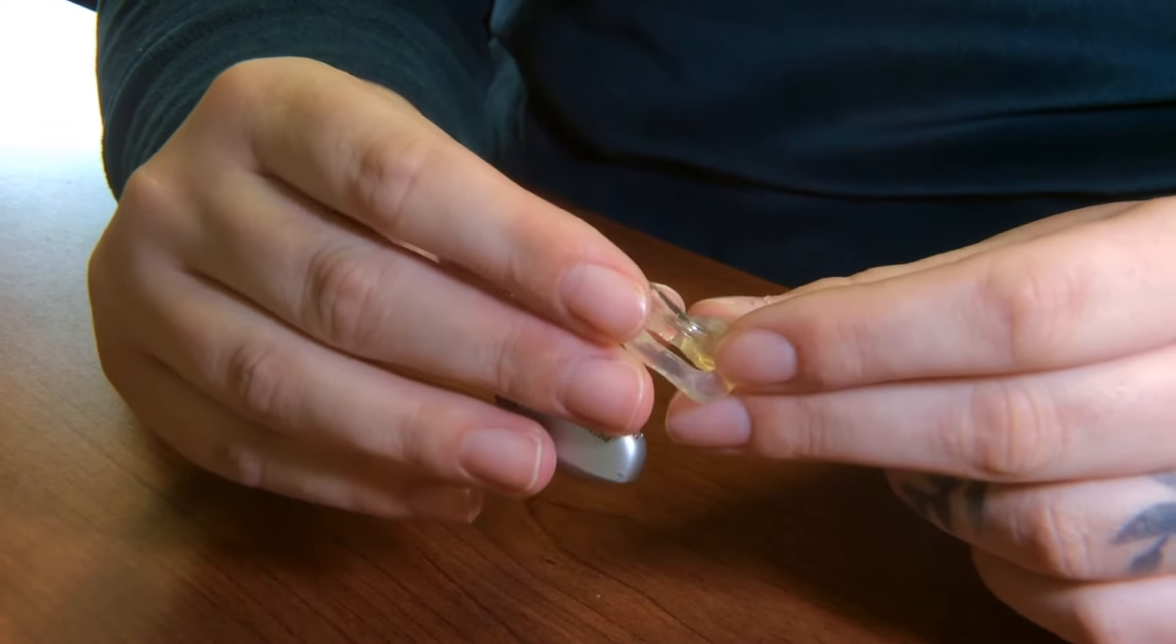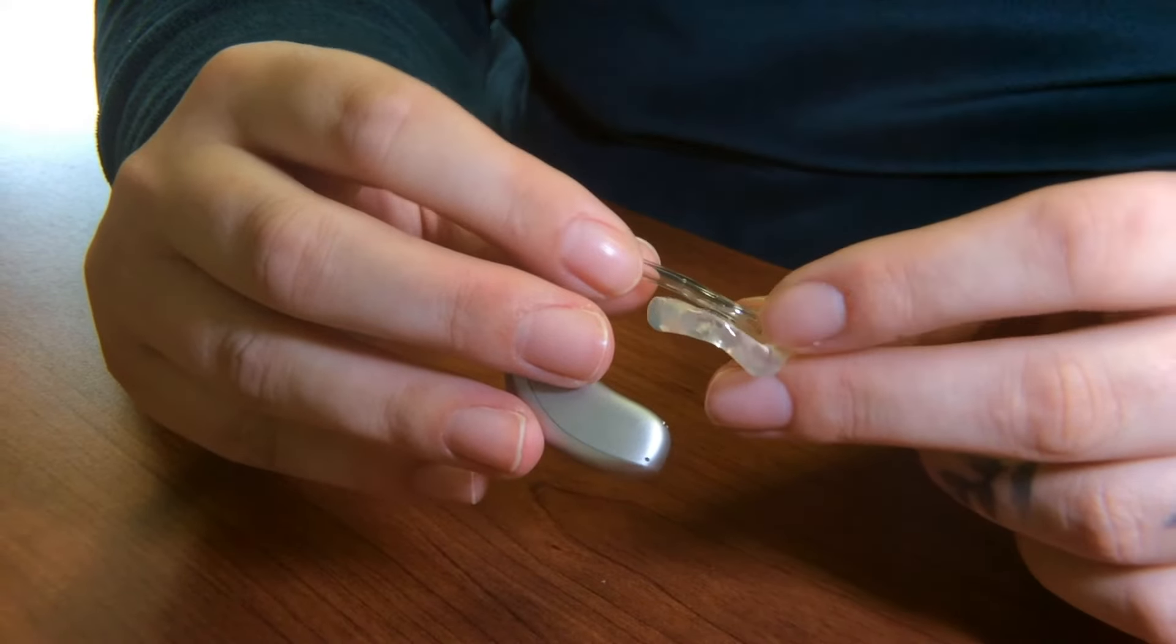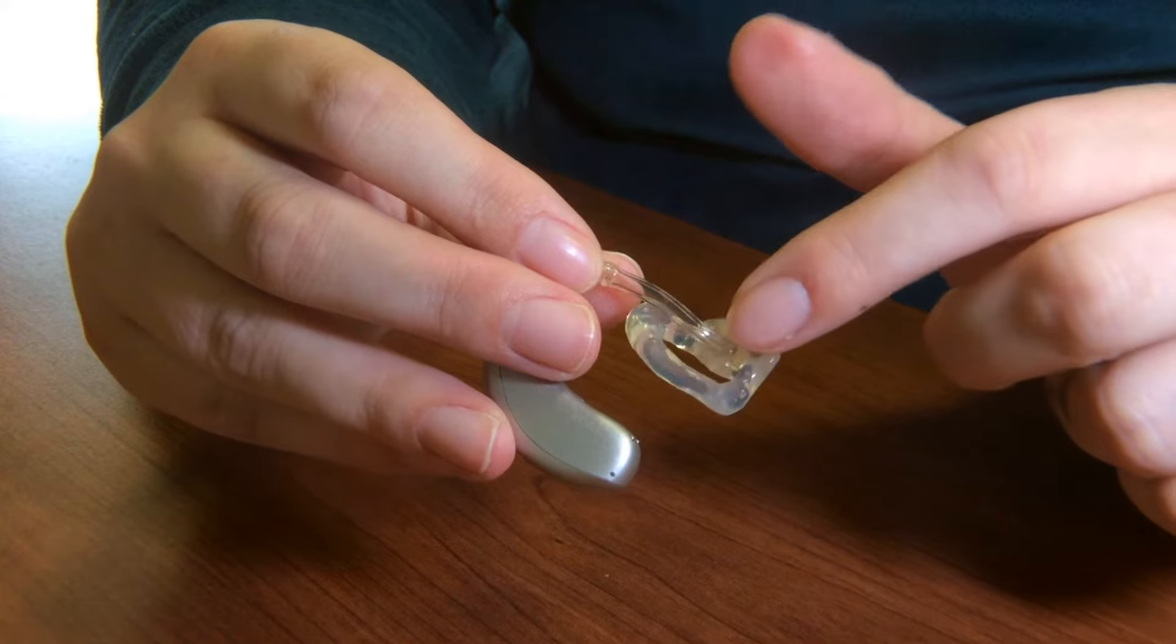Once you've cleared the ear mold, then you want to look at the tubing and also check for any kind of cracks, any kind of moisture, or any kind of blockage in the tubing itself.